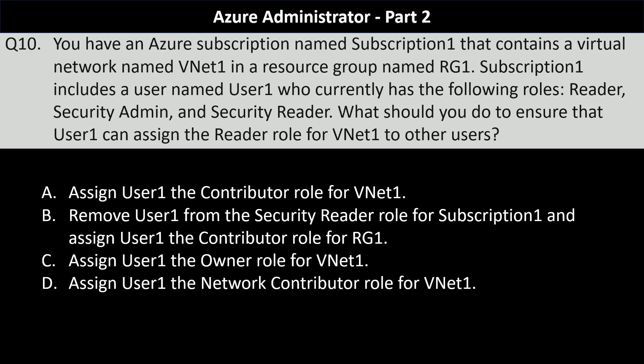Next question. You have an Azure subscription named Subscription1 that contains a virtual network named VNet1 in a resource group named RG1. Subscription1 includes User1 who currently has the Reader, Security Admin, and Security Reader roles. What should you do to ensure that User1 can assign the Reader role for VNet1 to other users? Your options are: assign User1 the Contributor role for VNet1, remove User1 from Security Reader for Subscription1, assign User1 the Contributor role for RG1, assign User1 the Owner role for VNet1, or assign User1 the Network Contributor role for VNet1. The correct answer is option C — assign User1 the Owner role for VNet1.